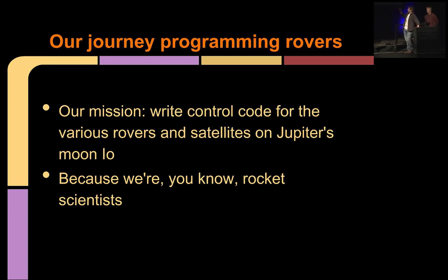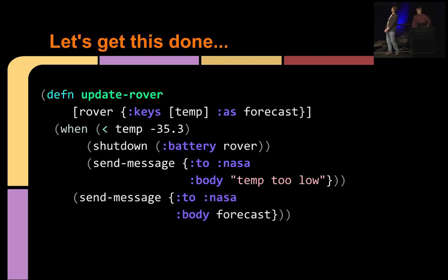Our mission is to write control code for the various rovers and satellites as they collaborate to explore Jupiter's moon Io, because we are, in fact, rocket scientists. Well, this won't be hard. We know Clojure. We know what we're doing. Why don't you go write some code? That was easy.